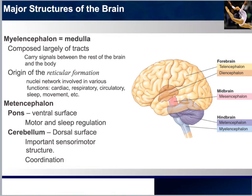Think of the reticular formation as two strands responsible for our cardiac functions, breathing, circulatory functions, sleep, and movement. It is a complex network of about 100 tiny nuclei occupying the central core of the brain stem, from the posterior boundary of the myelencephalon to the anterior boundary of the midbrain. Posterior refers to the back, anterior refers to the front.